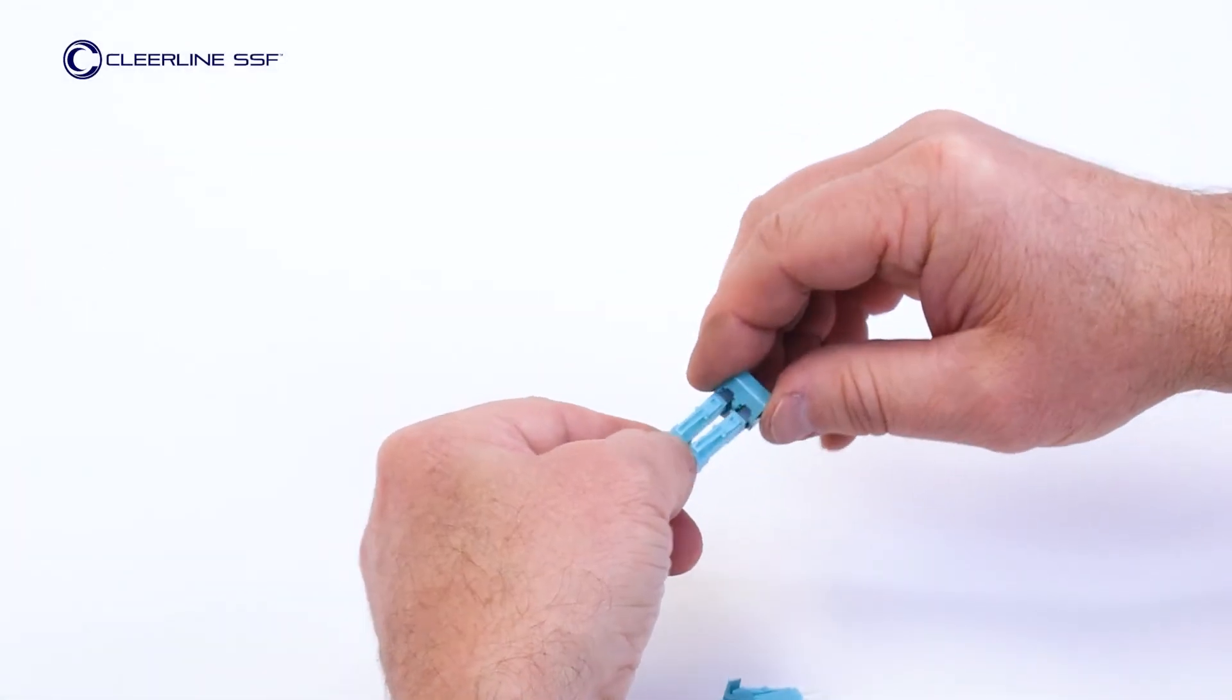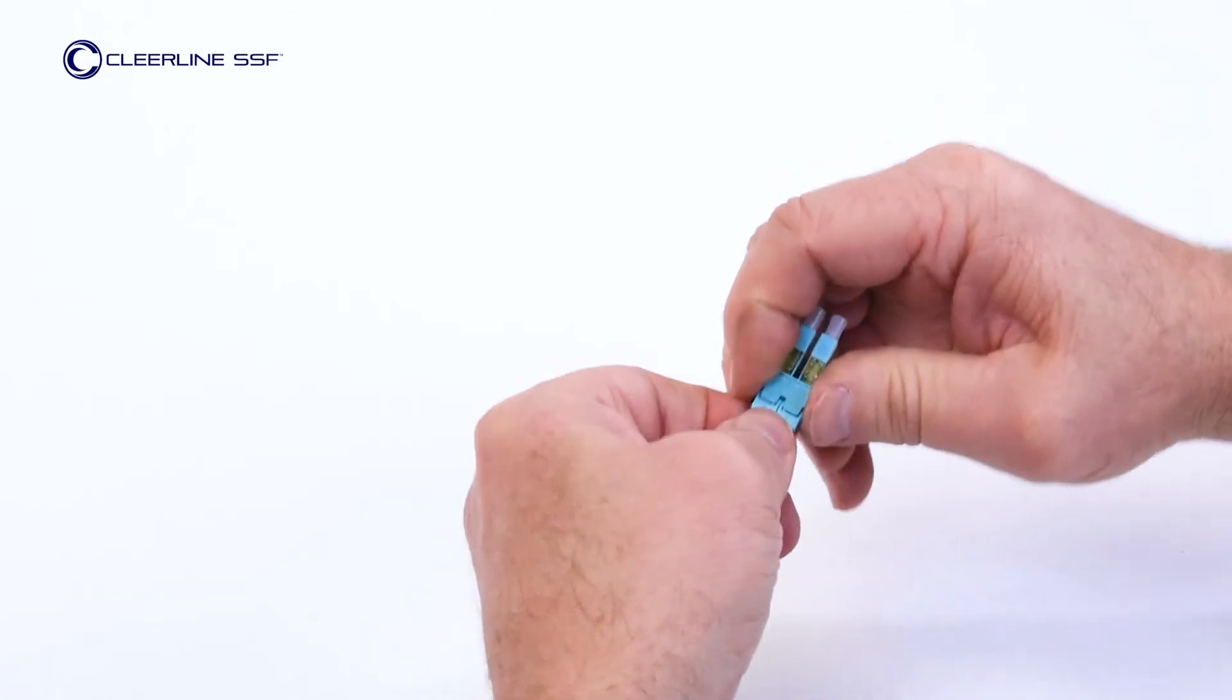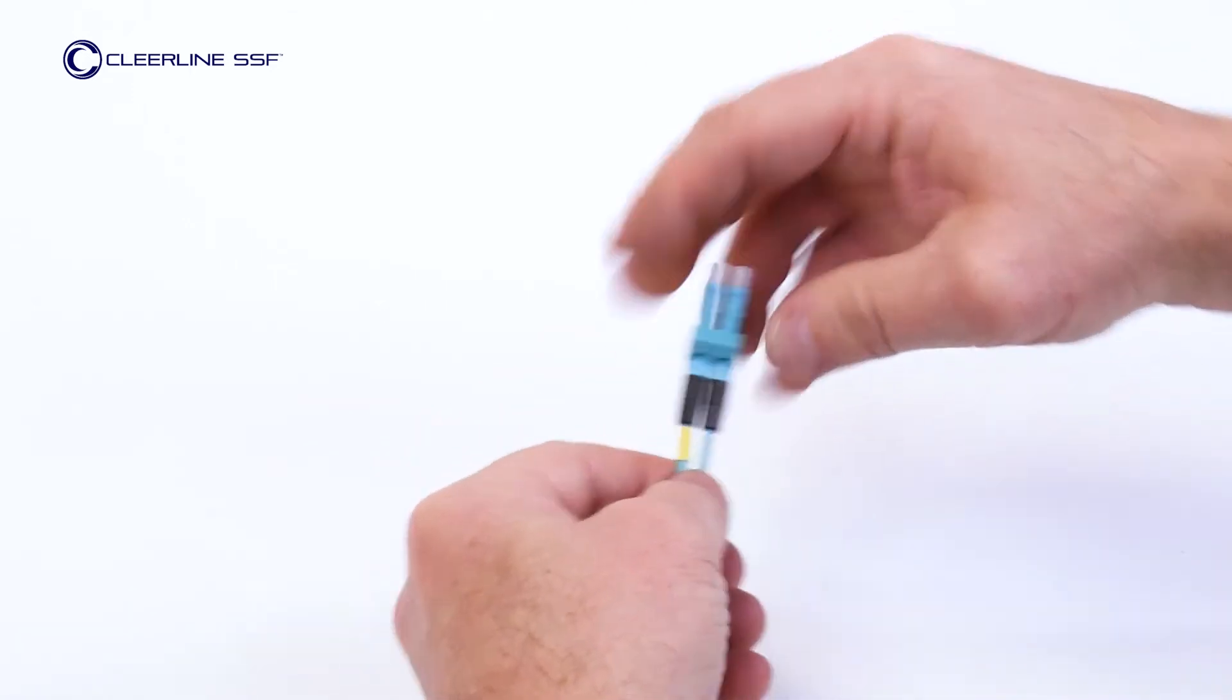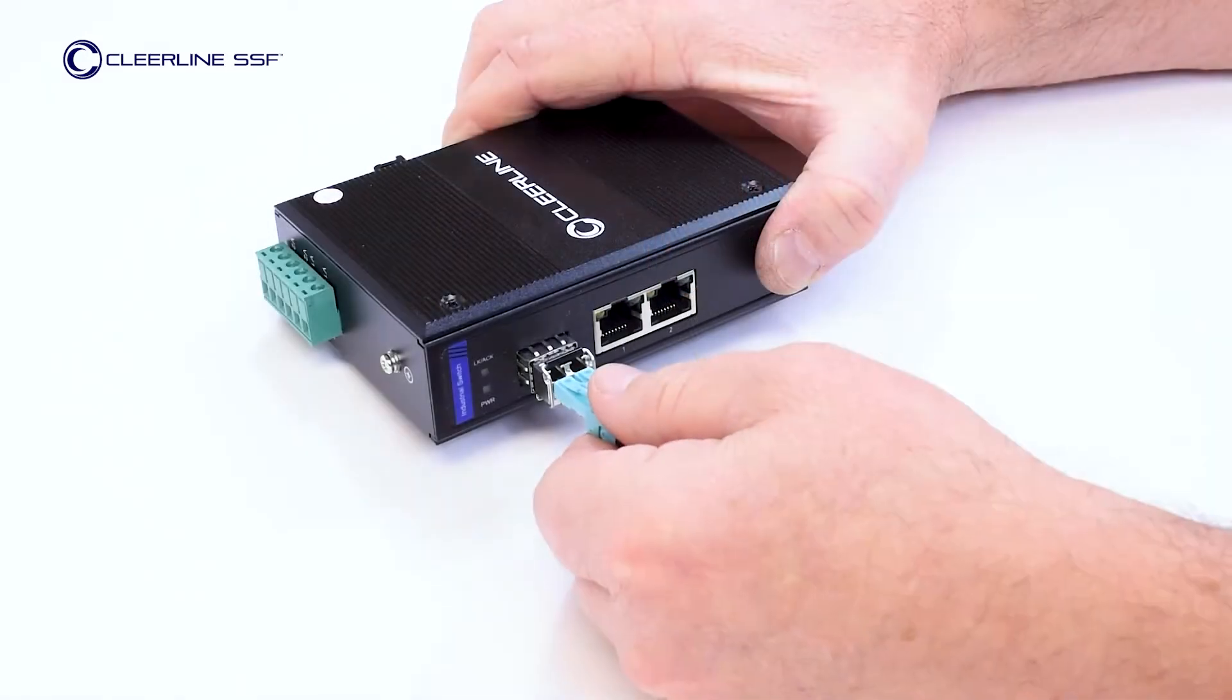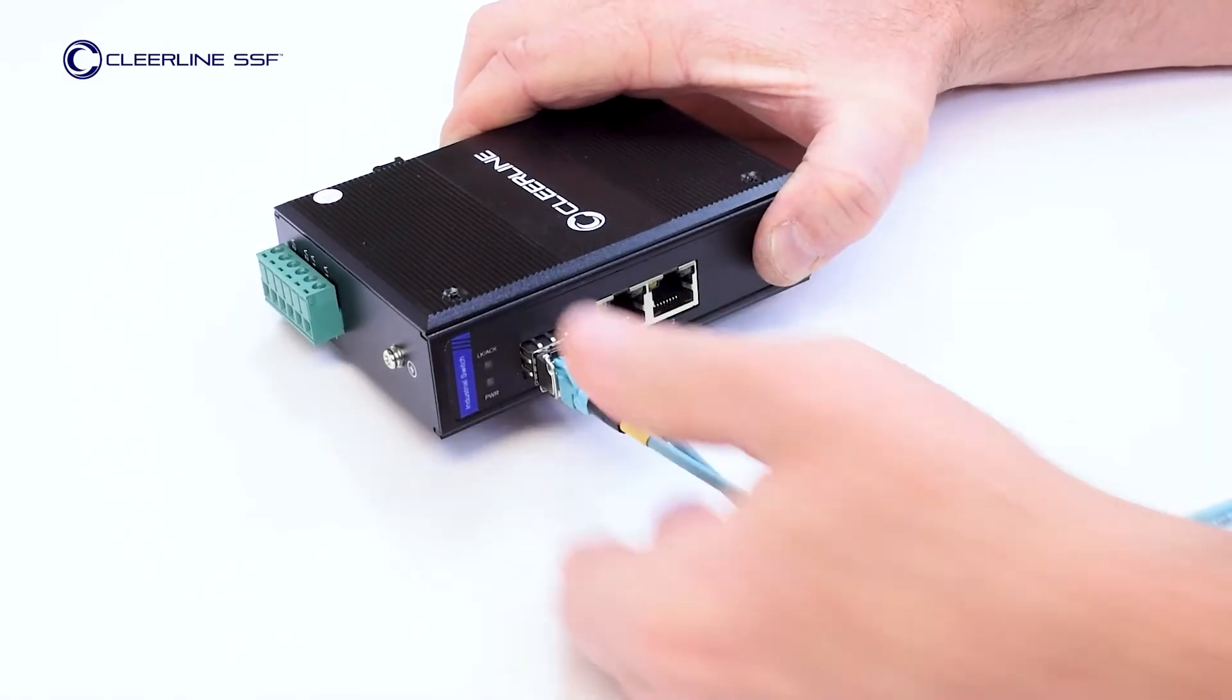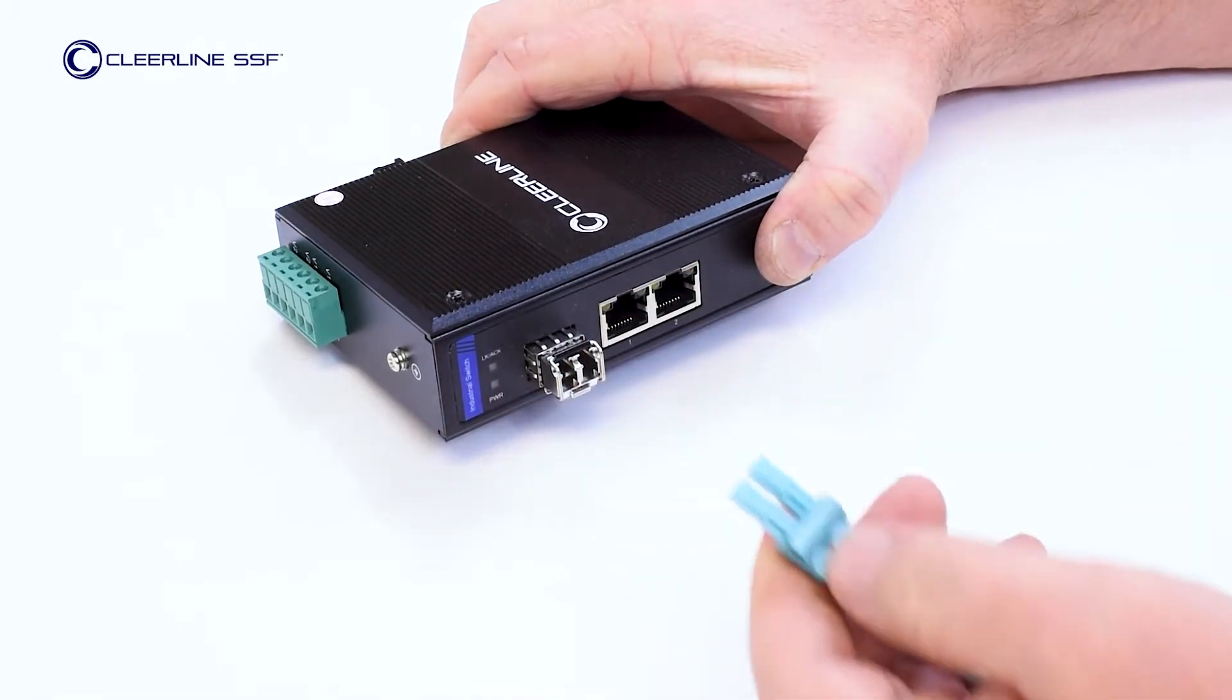Convert individual Clearline SSF-LC connectors to duplex or pairing assemblies with Clearline SSF-LC connector clips. Our specialized design holds connectors securely and maintains correct polarity, all while allowing easy connection to duplex ports.